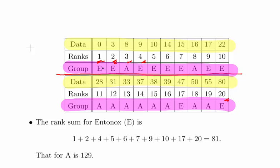What we're going to do here is just calculate, sum up all the ranks that are associated with the Entonox. So we have 1, 2, 4, 5, 6, 7, 8, 9, 10. Just sort of collect them all up and add up all of those ranks there. So if I added them all up, I should get 81.